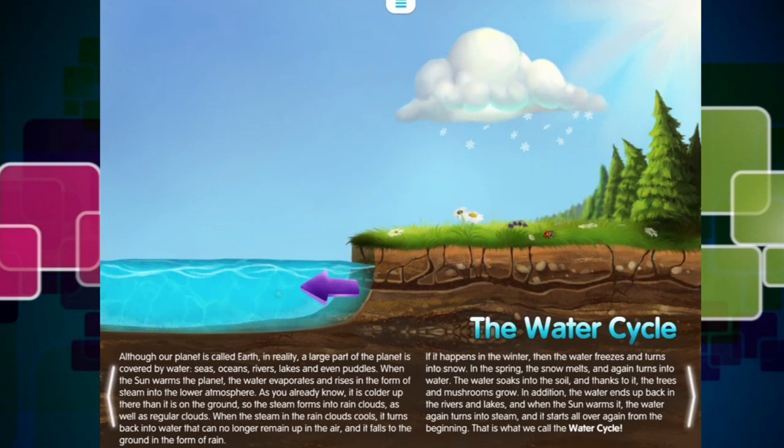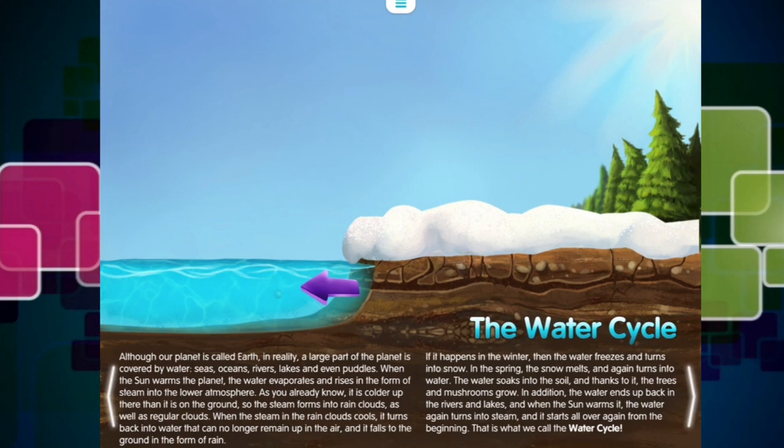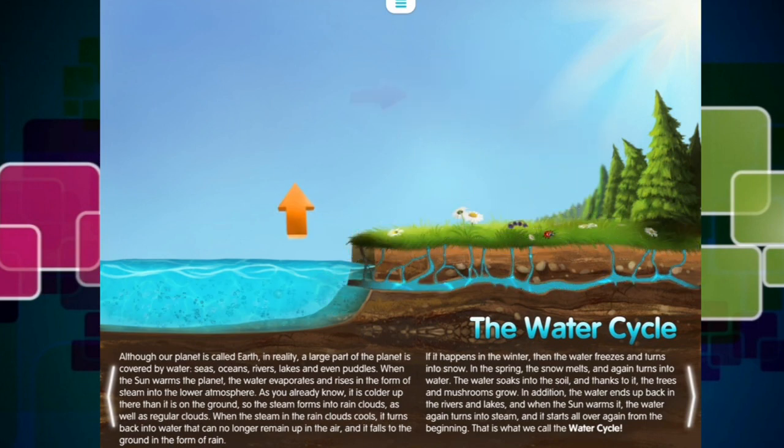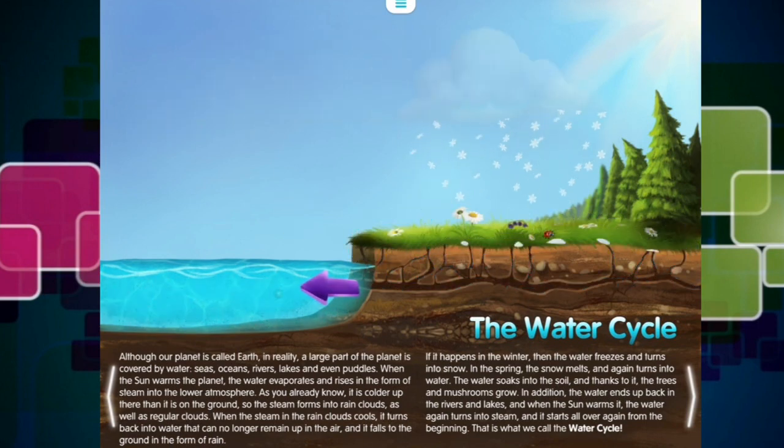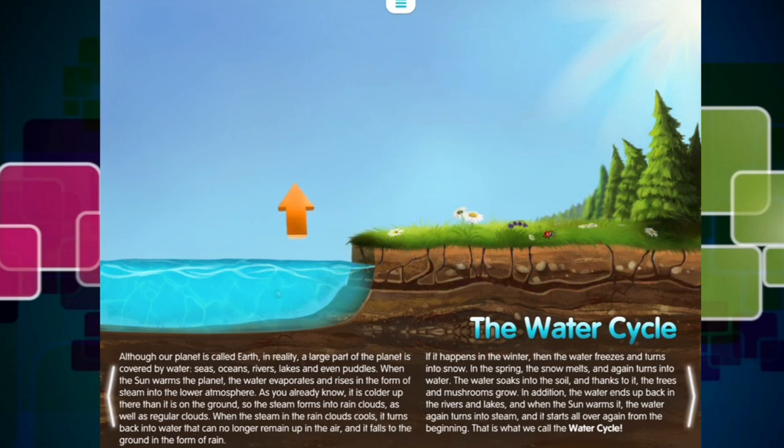When the steam in the rain clouds cools, it turns back into water that can no longer remain up in the air, and it falls to the ground in the form of rain. If it happens in the winter, then the water freezes and turns into snow. In the spring, the snow melts, and again turns into water. The water soaks into the soil, and thanks to it, the trees and mushrooms grow. In addition, the water ends up back in the rivers and lakes, and when the sun warms it, the water again turns into steam, and it starts all over again from the beginning. That is what we call the water cycle.